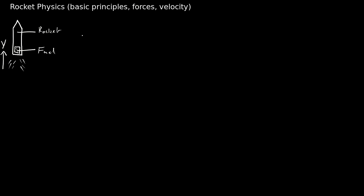After familiarizing ourselves with this simple system, we also need to analyze the mass of this whole system. The mass is obviously going to depend on time because the fuel gets less and less as the rocket takes off. So we have a mass that is dependent on time — m of t — and this is going to equal the initial mass of the whole system: the mass of the fuel filled in at the beginning plus the mass the rocket naturally has.